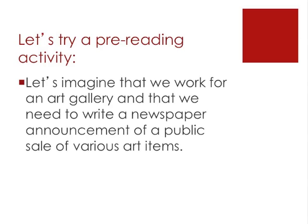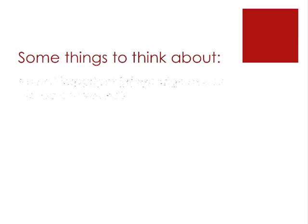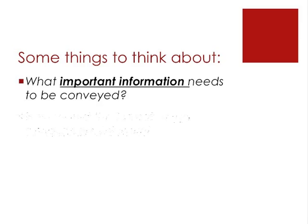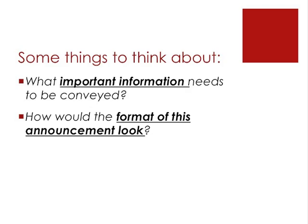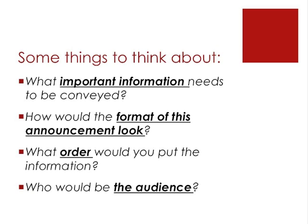We're just about ready to see our first reading. Let's think about how these readings are organized with a pre-reading activity. Imagine that we work for an art gallery and need to write a newspaper announcement of a public sale of various art items. Think about what this announcement would look like: what important information we need to give, what the actual format would look like, what kind of order we'd put the information in, what would go first and what would go next. If we're going to capture someone's attention, we need to think about who would be the audience, and what part of the newspaper we'd put this advertisement in.